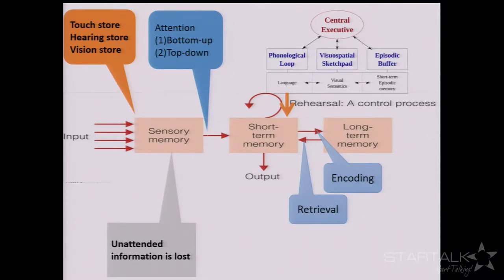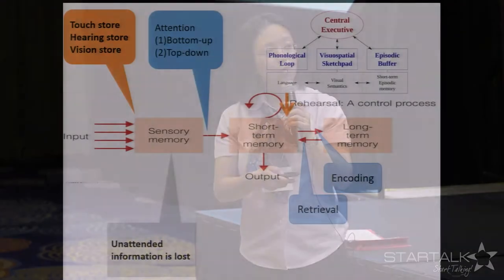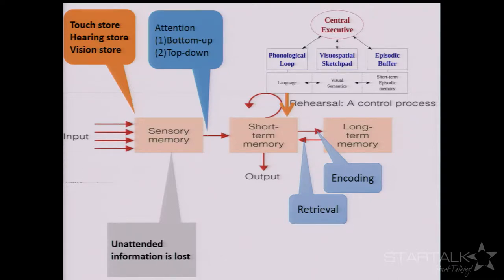Now let's look at short-term, or working, memory. Baddeley's revised working memory model mentions a central executive that works with a phonological loop, visuospatial sketchpad, and episodic buffer, each of which works with language semantics and episodic memory. Unrehearsed information is lost, so we must make sure students rehearse what they learned. There are two popular rehearsal techniques: pairing new items with something more meaningful, and pairing new information with well-known information.